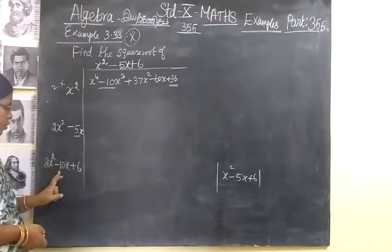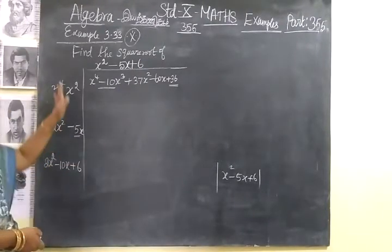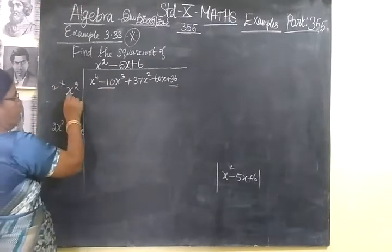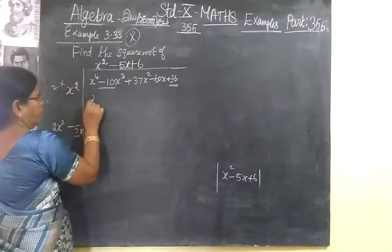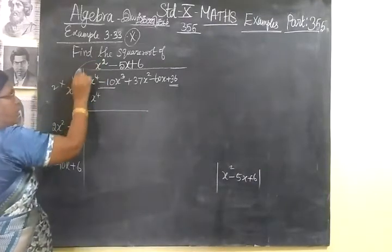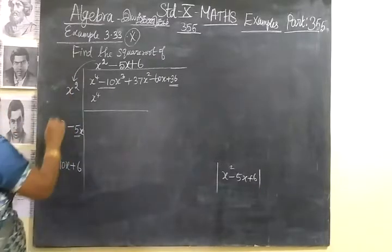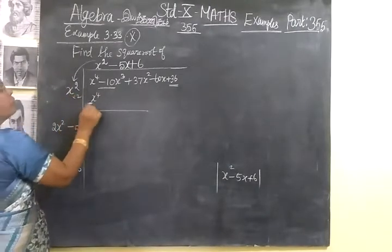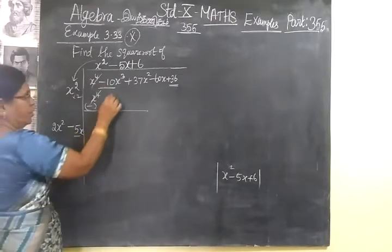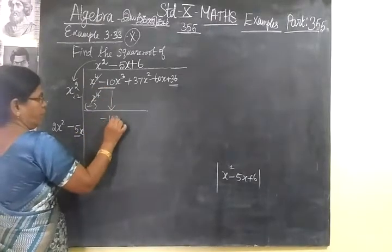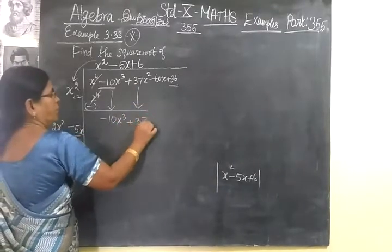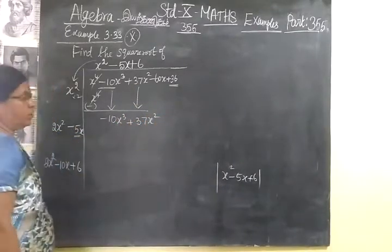You multiply this by 2 and write -10x. On the side the answer will be -10x². Now you multiply x² into x² to get x⁴. You change the sign; it will be cancelled.